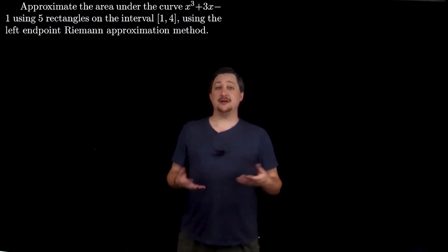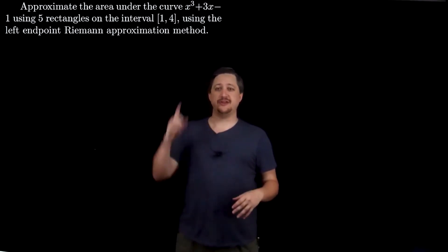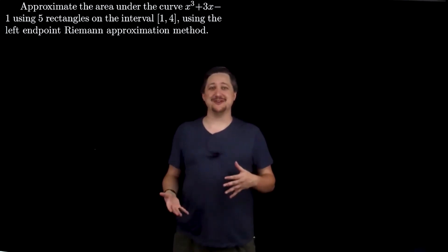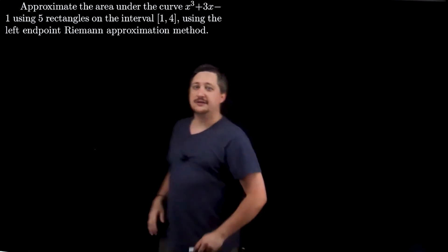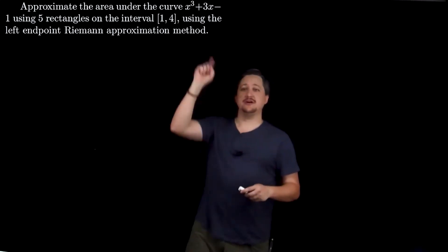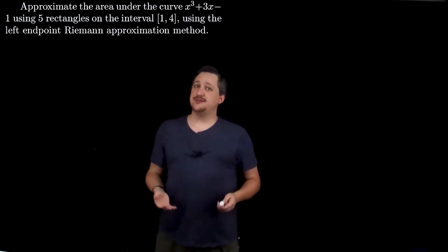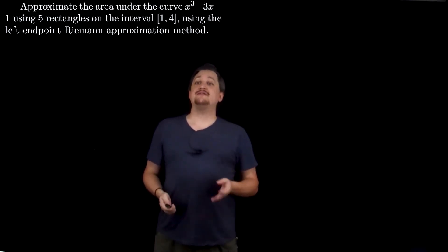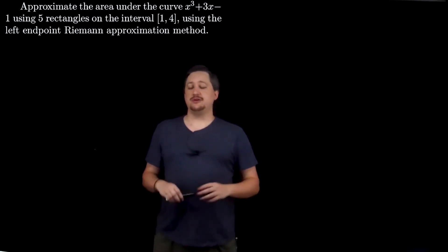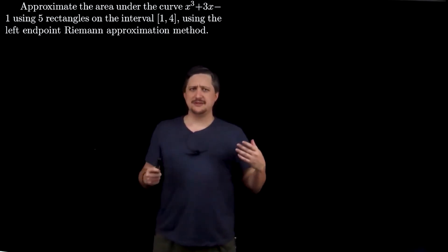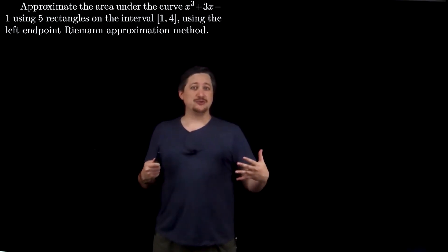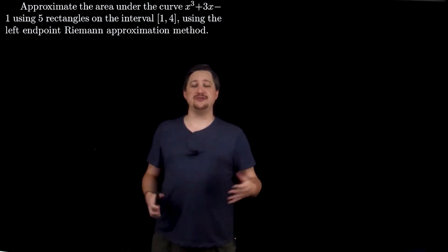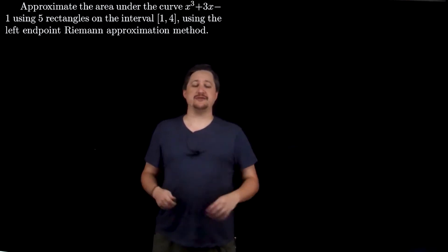Depending on the order you're watching these examples, you may notice this is actually almost identical to one of the other example videos — the same function x cubed plus 3x minus 1, same number of rectangles — five — over the same interval one to four. But now we're going to use the left endpoint rather than the right endpoint. The work will look very similar but importantly not quite the same — that's the tricky part, it's very easy to confuse the two.